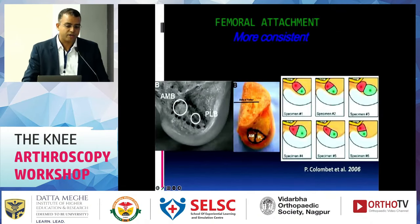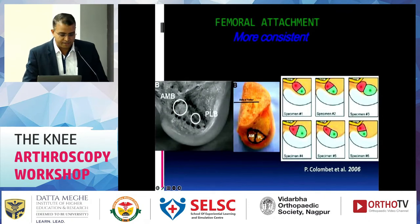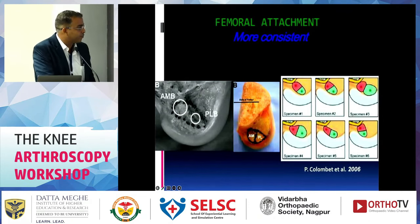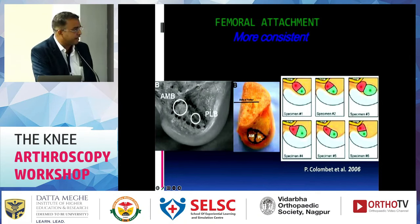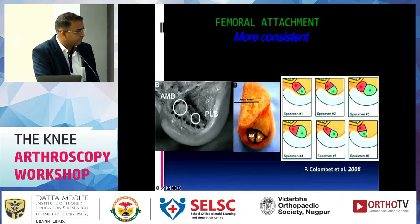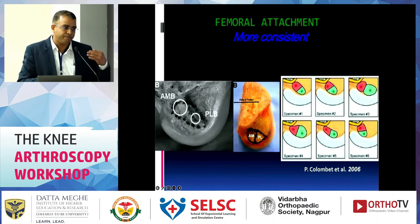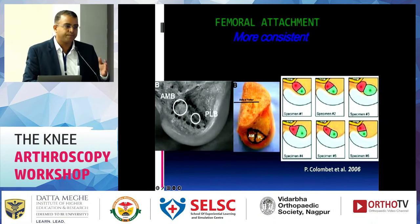The femoral attachment is more consistent. In our terminology: shallow versus deep is the anterior-posterior axis, and high versus low is the proximal-distal axis. The intercondylar ridge is a key landmark — every arthroscopy surgeon should be able to identify it. Just proximal to the bifurcation ridge is the anteromedial bundle, and posterior to that is the posterolateral bundle.